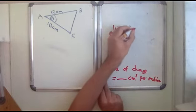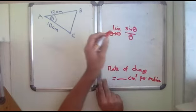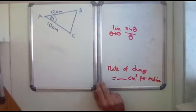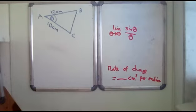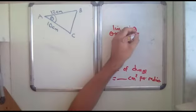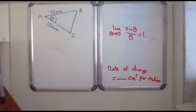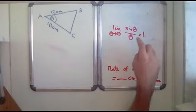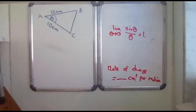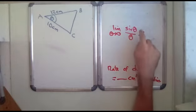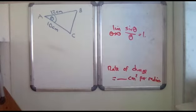Of sine theta over theta, that sort of thing. That limit only equaled one when theta was in radians, and that was the limit that you use to differentiate from first principles all of the sine and cosine functions. This limit doesn't work if it isn't in radians.